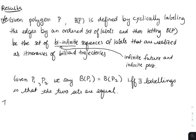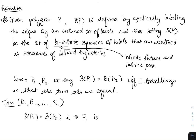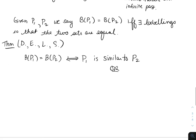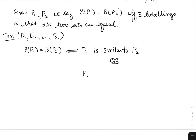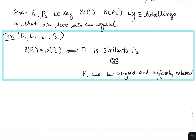So now we can state our theorem. This is with Moon, Vivica, Chris, and myself. If the two bounce spectra are equal, this is if and only if either polygon P1 is similar to polygon P2, or both of them are right-angled polygons and they're affinely related. So that's the exceptional case that we saw earlier.